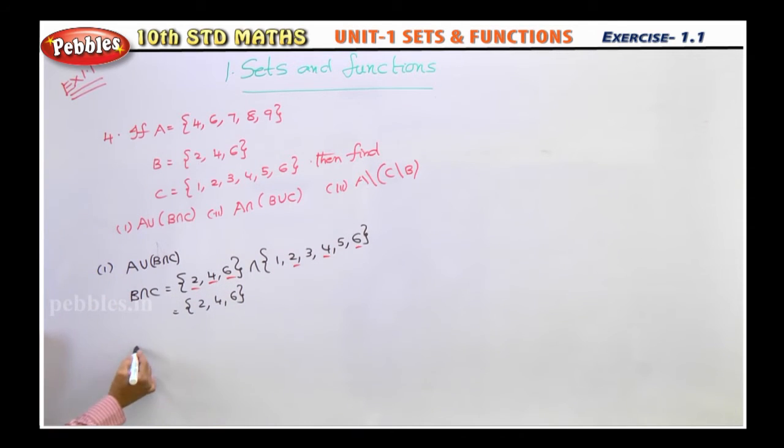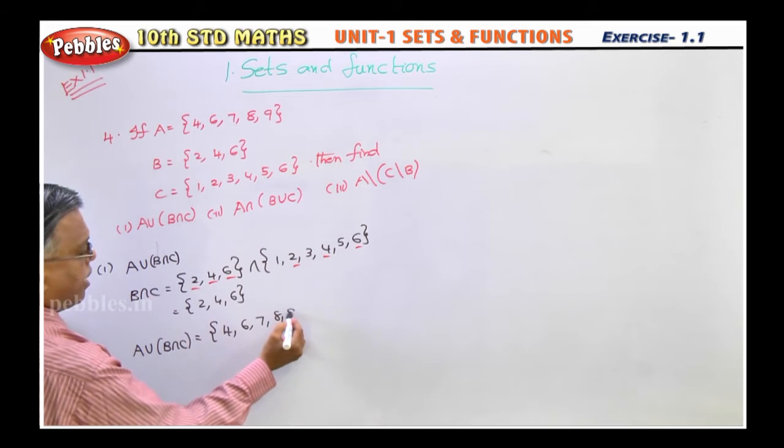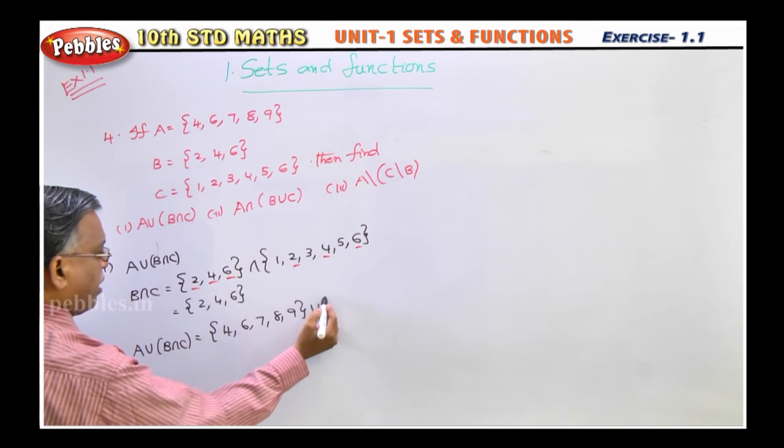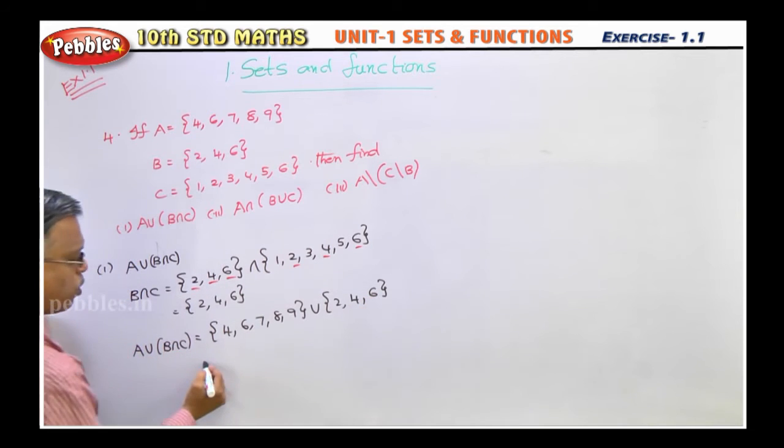Now next one, A union B intersection C. So first, you write down first A set because A starts first. So what is your A set? 4, 6, 7, 8, 9. Union, what is B intersection C? 2, 4, 6.